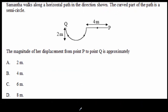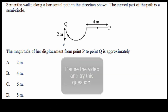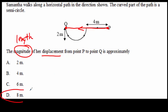Here are a couple of IB questions to test your knowledge. We're looking for the displacement from the initial point P to the final point Q — that displacement is this vector here. We're looking for the magnitude of the displacement, meaning just the length without direction. The length will be 8 meters, because our radius is 2 meters, and 4 plus 2 plus 2 makes 8 meters.